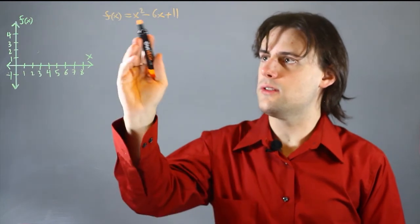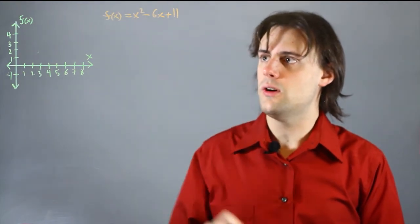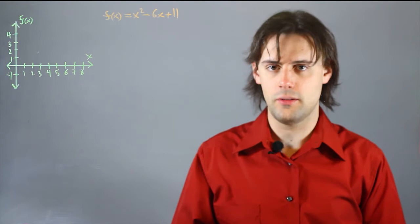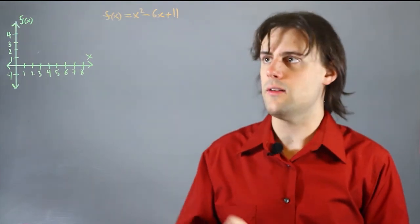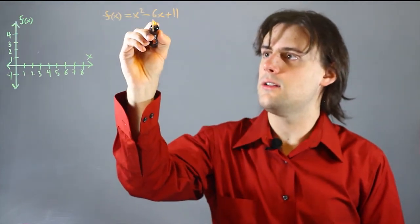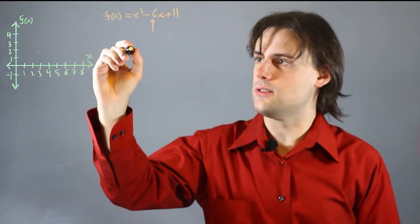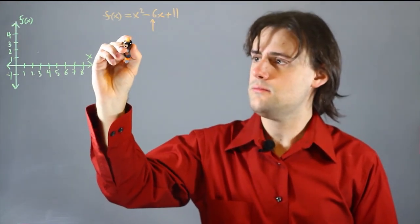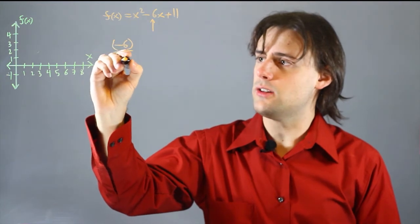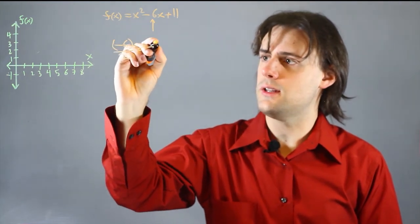In order to write this in standard form, we want to do the operation known as completing the square. To do that I take a look at the coefficient in front of the linear x term, in this case it's negative 6, and I divide it by 2 which gives me negative 3.